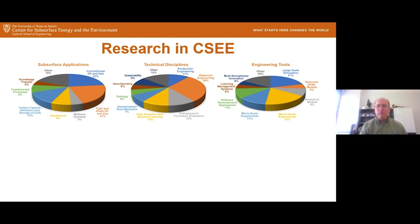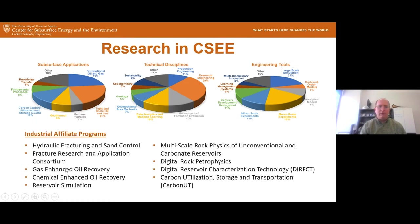The different tools we use for these investigations include obviously experiments and simulations, but also other types of tools that we can use to get at our research directions. Much of our research happens through our very successful industrial affiliate programs. If you're interested in any of these topics, you can go to our website and find out more information on these IAPs and how to get in touch with the people who run them.